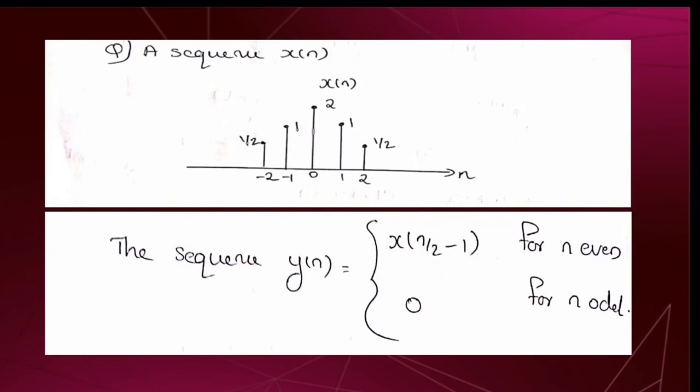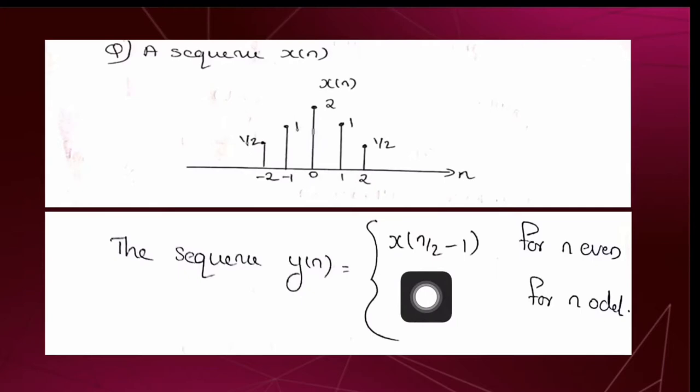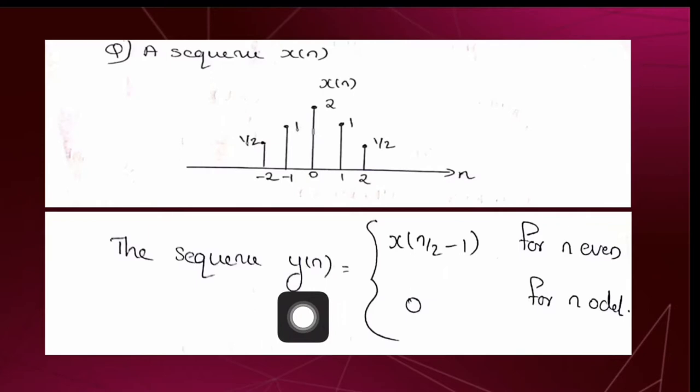Here, the graphical representation of a discrete time sequence x[n] is given. Another discrete time sequence y[n] is defined in terms of x[n] as: x[n/2 − 1] for n even, and 0 for n odd. We are asked to find out the graphical representation of y[n]. Have a look at the four options given.